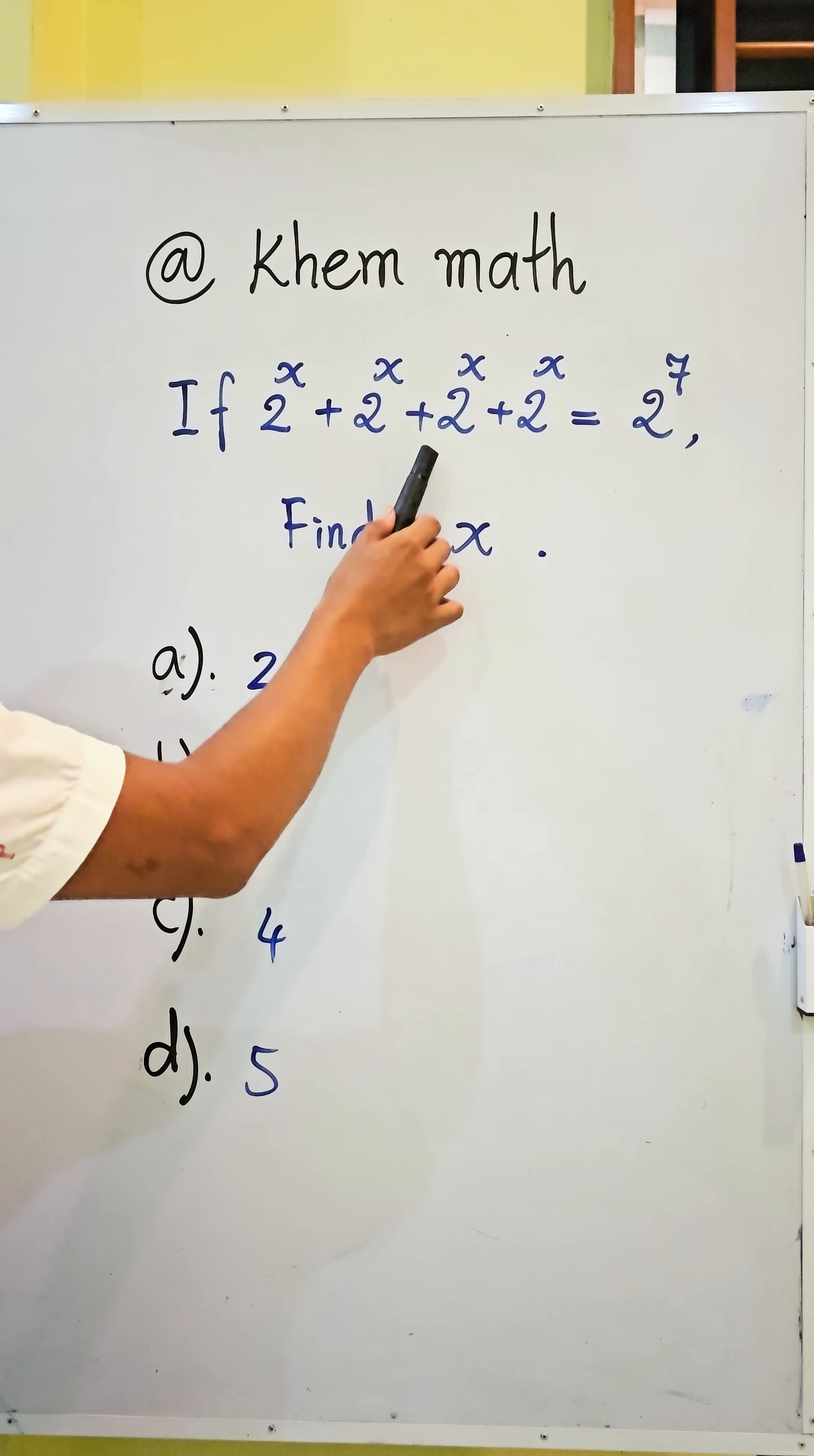If 2 power x plus 2 power x plus 2 power x plus 2 power x equals 2 power 7, find the value of x.